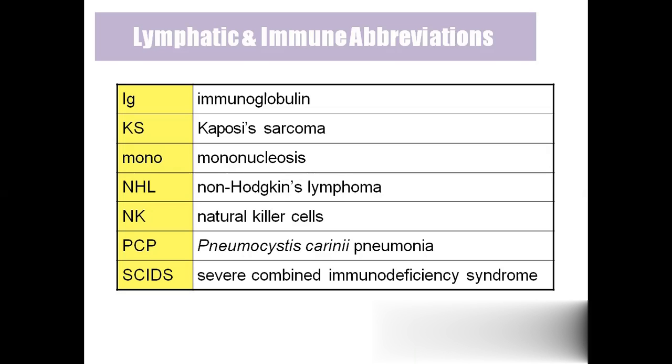NK — natural killer cells. PCP — pneumocystis carinii pneumonia, which is pneumonia in AIDS patients. SCIDS — severe combined immunodeficiency syndrome.